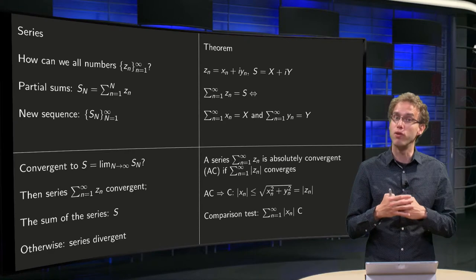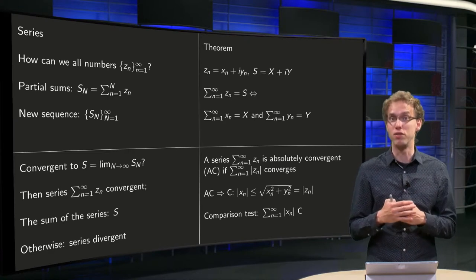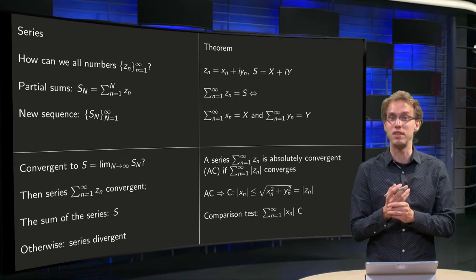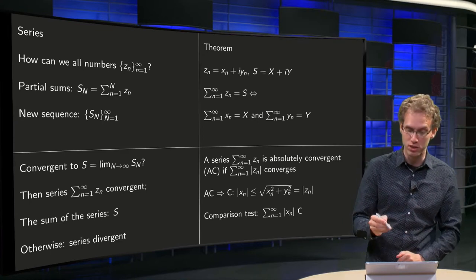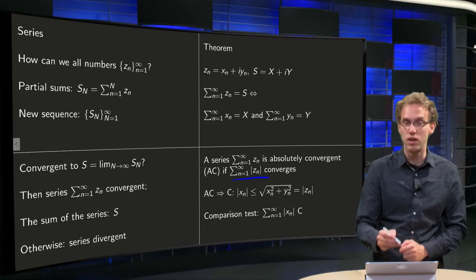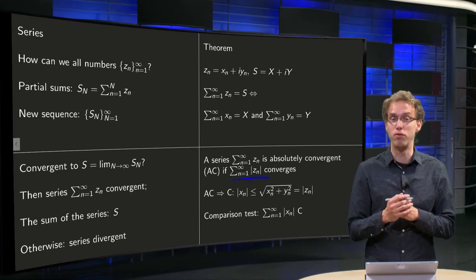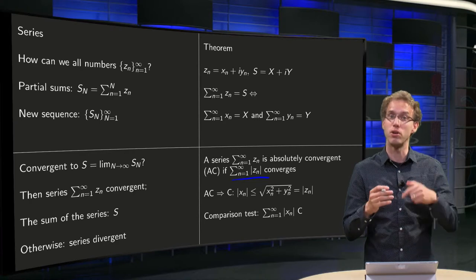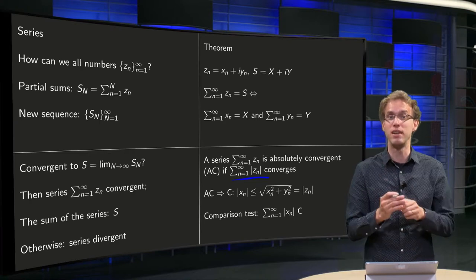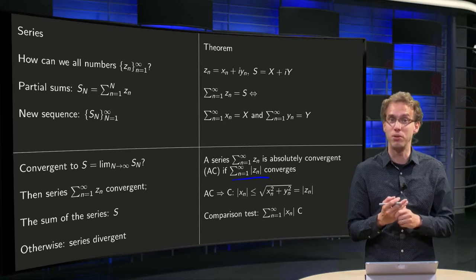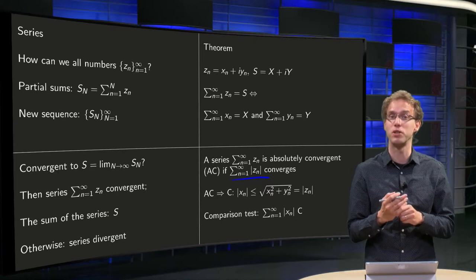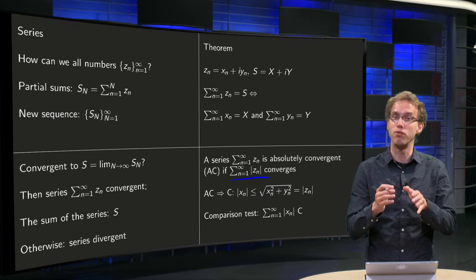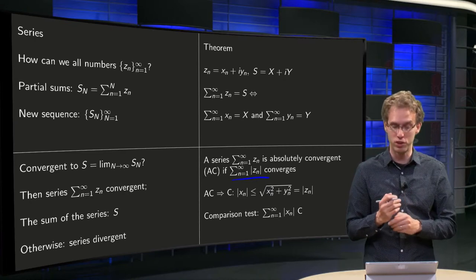Usually we will look at absolute convergence of a series of complex numbers. A series sum from N=1 to infinity of Z_N is called absolutely convergent if the series of its norms converges. Notice that the norm of Z_N is a real number, so the sum from N=1 to infinity of the norm of Z_N is a standard series of real numbers.